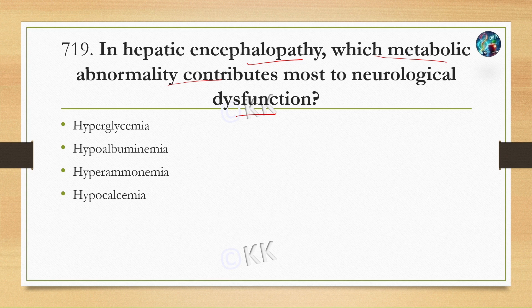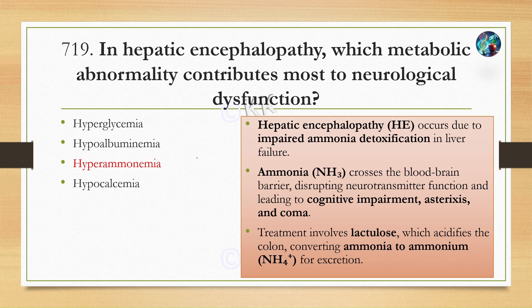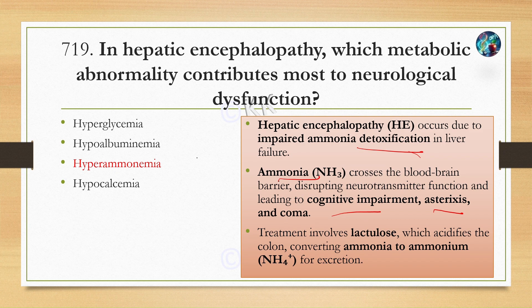We have discussed ammonia previously. Ammonia in the blood can cross the blood-brain barrier. In hepatic encephalopathy, the liver loses its detoxification function, so blood ammonia builds up. It crosses the blood-brain barrier, disrupting neurotransmitter function and leading to cognitive impairment, asterixis, and coma. Lactulose is used to acidify the colon, converting ammonia to ammonium for excretion.